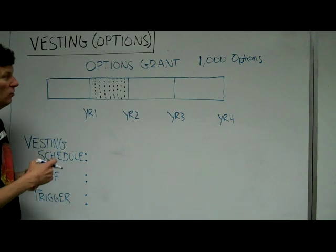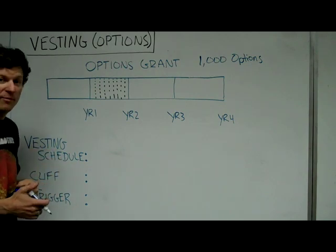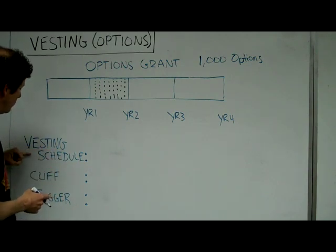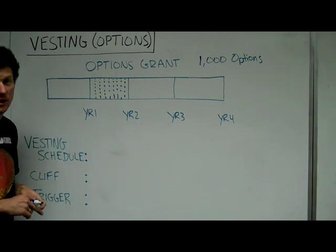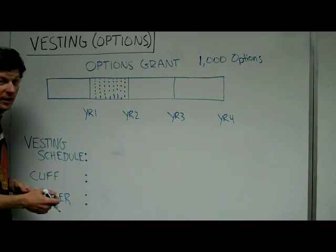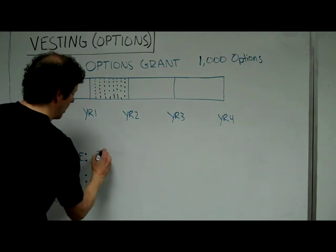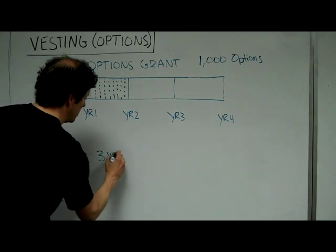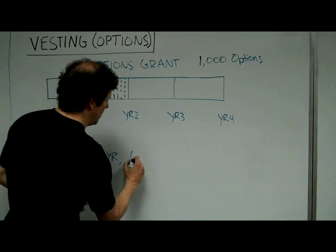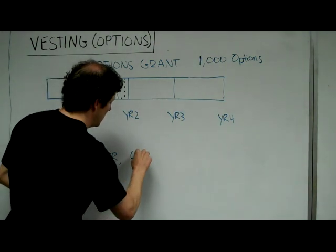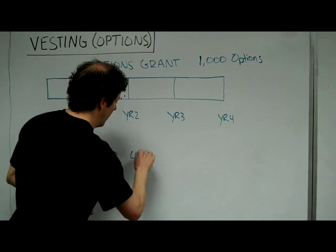Essentially, vesting has to do, usually almost always, with the timeframe. In this case, they refer to the timeframe as a vesting schedule. Companies can choose various vesting schedules. Common vesting schedules are three years. The most common that we're going to talk about today is a four-year vest.